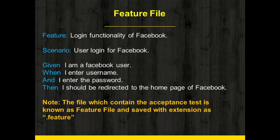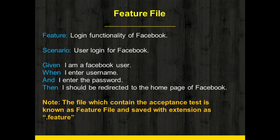Similarly, the Then keyword defines the outcome of the When action. As mentioned, this file is termed a feature file, in which each line — Given, When, and Then — is called a step, which starts with a keyword. This file must be saved with the extension dot feature. Remember, this file also acts as a documentation skeleton of your automation test, which is very important. We'll see more feature file examples and more acceptance tests in the upcoming sessions with other BDD concepts. Thank you.